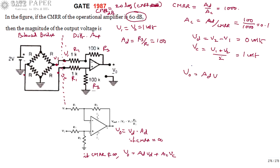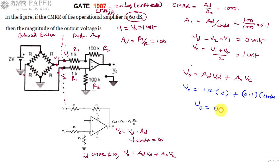Calculating V0 = AD·VD + AC·VC = 100 × 0 + 0.1 × 1 = 0.1 volts, or 100 millivolts. Even though the bridge is balanced and no differential signal exists at the inputs, we still get an output of 100 mV. This is because CMRR is not infinite — the op-amp is non-ideal — so the common mode signal produces a non-zero output.